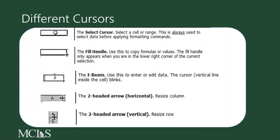The next cursor is the I-beam, which we see typically when we are inside of a cell and we're either entering data or editing existing data. Finally, we have the two-headed arrow — a horizontal one and a vertical one. We will see these when we need to resize columns or rows. Excel does a lot of things automatically, but one thing it won't do automatically is resize columns or rows, which we often have to do to fit all of our data.